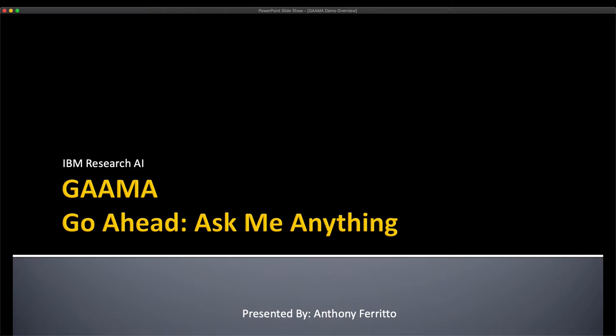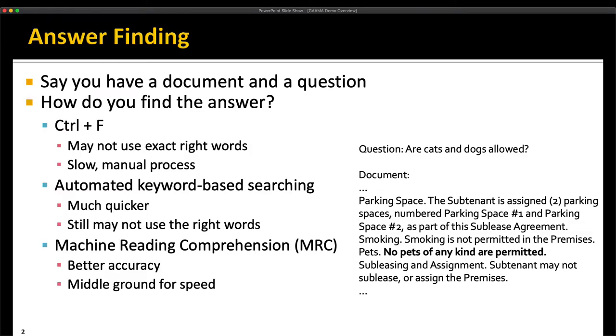Hello and welcome to Gamma Go Ahead Ask Me Anything, put together by our team at IBM Research AI. The problem that Gamma addresses is answer finding. Say you have a document and a question you want to ask about that document, such as the example on the right where we have a sublease agreement and a question of are cats and dogs allowed. How do you find that answer?